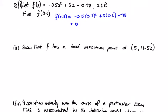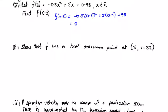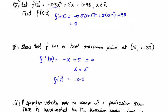Show that f has a local maximum at (5, 11.52). Differentiating: f'(x) = 2 × (−0.5)x + 5 = −x + 5. Setting the slope to 0 gives x = 5. Plugging back into the original: −0.5 × 25 + 5 × 5 − 0.98 = −12.5 + 25 − 0.98 = 11.52. This confirms the local maximum at (5, 11.52).